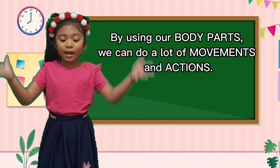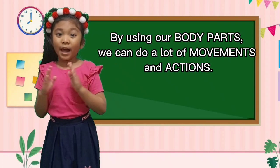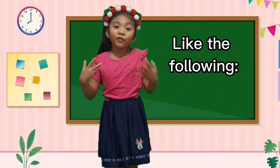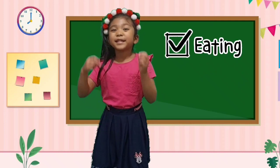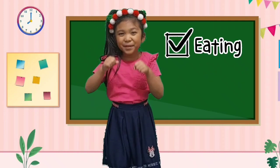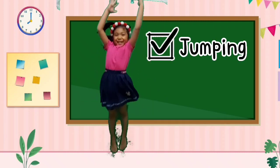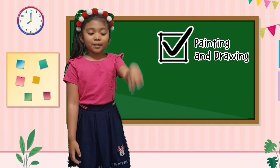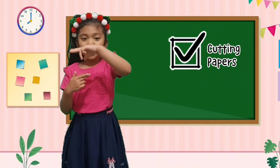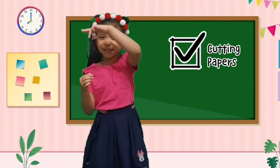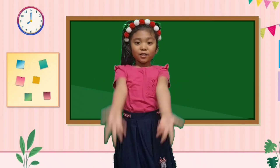By using our body parts, we can do a lot of movements and actions. Like the following: First, dancing. Second is eating. Third is jumping. Four is painting and drawing. Five is cutting paper. And a lot more movements and actions.